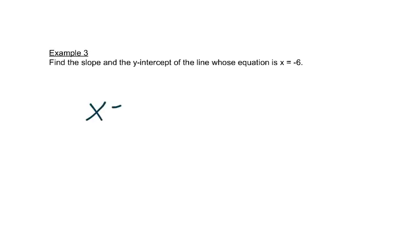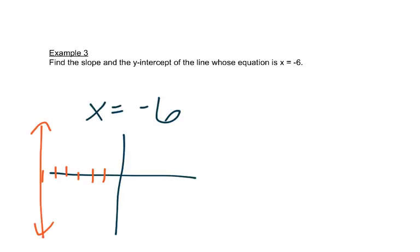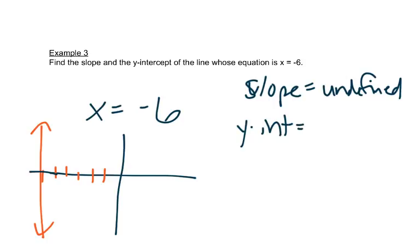Now this is a little bit tricky because this doesn't even have a y in it. Let's think about what this was. Remember we graphed this before. This is a vertical line that crossed the x-axis at negative 6. X always had to be negative 6. So what's the slope of a line that goes straight up and down? It's too steep, so the slope is undefined. There's no y in it, so it's just straight up and down, undefined. And the y-intercept, well this graph never crosses the y-axis, so there isn't a y-intercept.